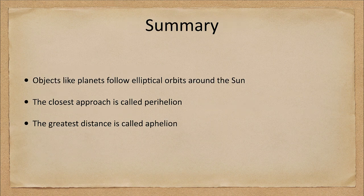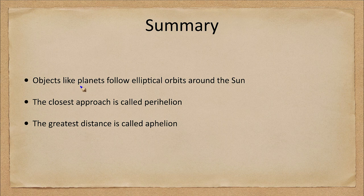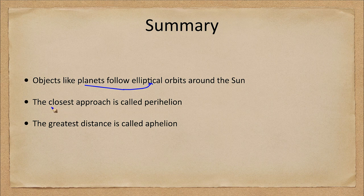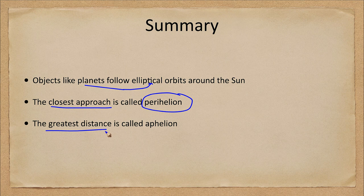Let's finish up with our summary. We talked about how planets follow elliptical orbits around the sun, and that means they're going to change their distance. Closest approach is perihelion, and the greatest distance away is called aphelion.